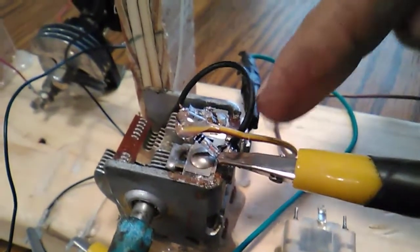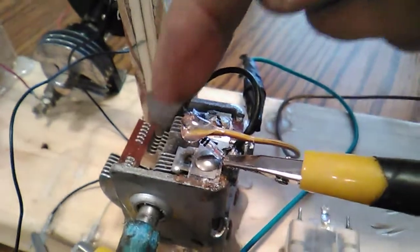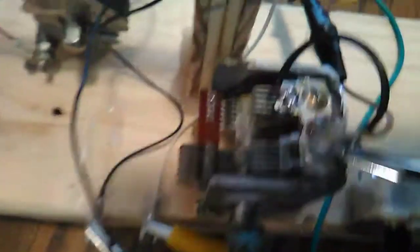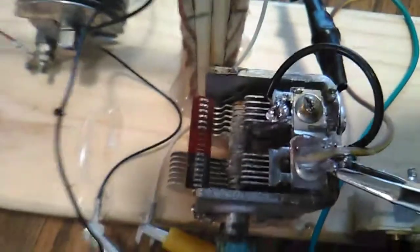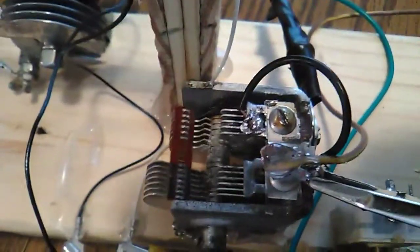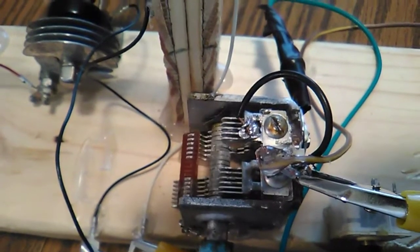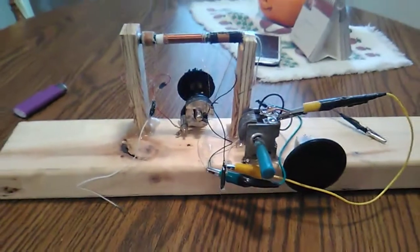This black wire here is just ganging these capacitors together. There are two capacitors in here. They call this a ganged capacitor, a ganged variable capacitor. So I just ganged them together in essence. That is it. That is a crystal radio.